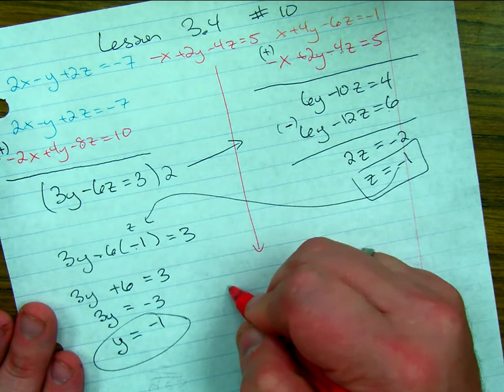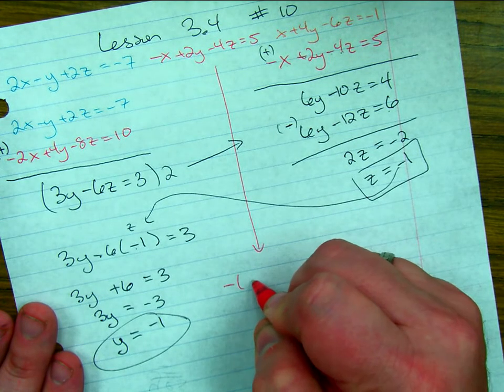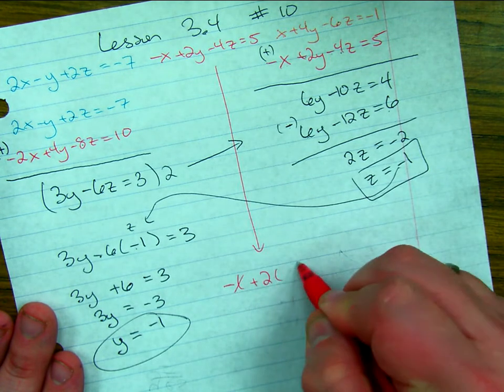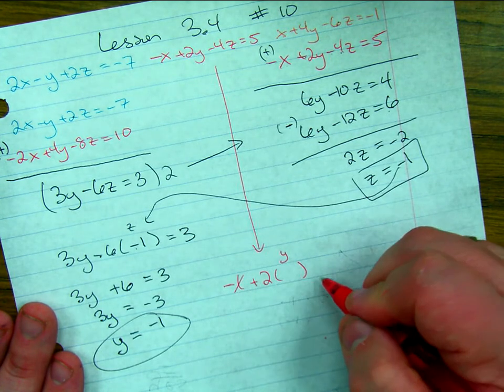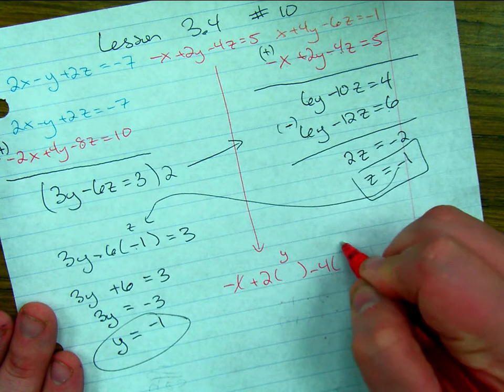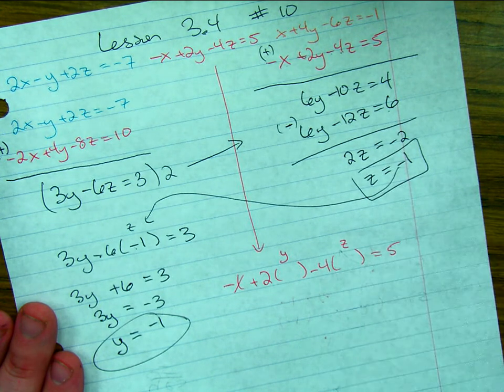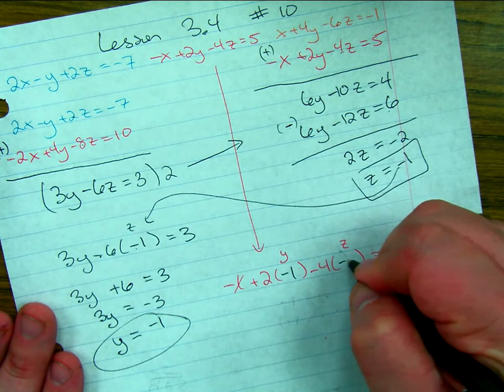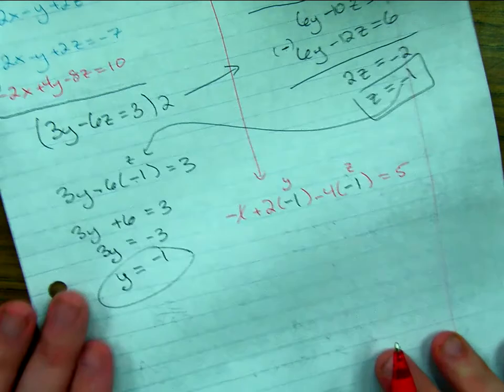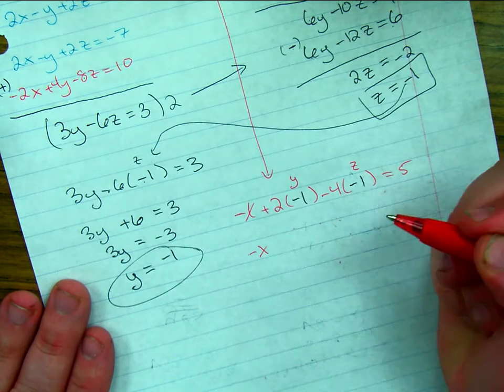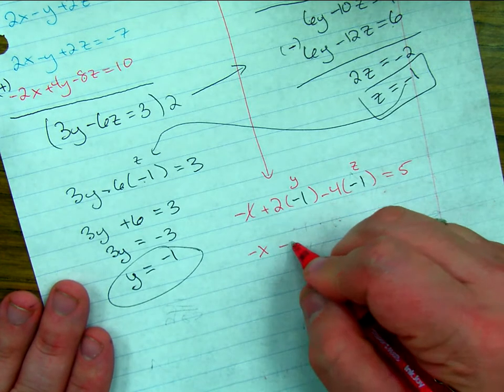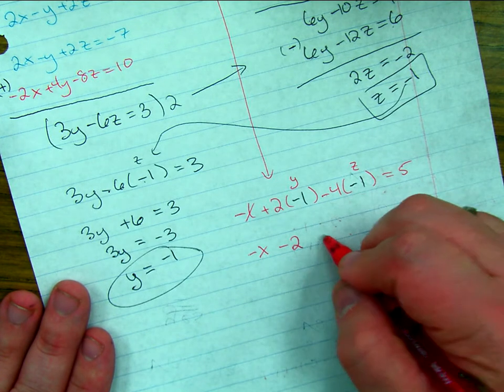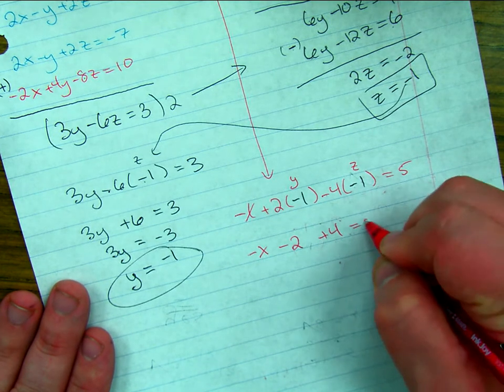I'm going to say negative x plus 2y minus 4z equals 5. But again, I know that my y value is negative 1 and my z value is negative 1. That gets me that negative x. Positive 2 times negative 1 is negative 2. Negative 4 times negative 1 is positive 4. Equals 5.